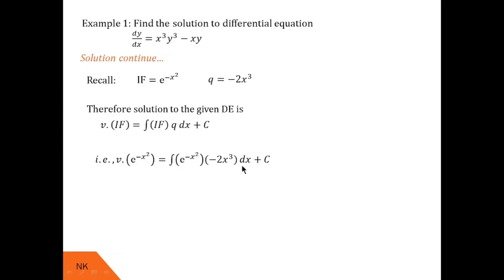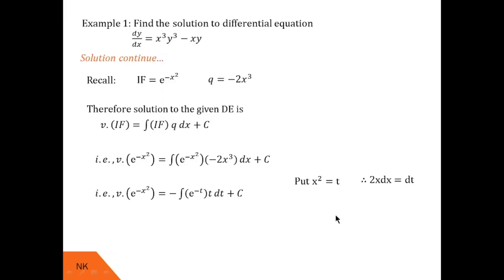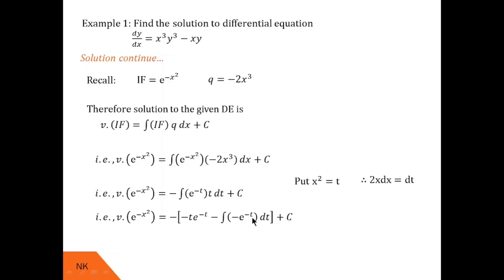To solve the RHS integral, we use the substitution x² = t, so 2x dx = dt. We split x³ = x²·x, allowing us to write the integral as −∫e^(−t) · t dt + C. Solving by integration by parts with u = t and dv = e^(−t) dt gives −[−te^(−t) − ∫(−e^(−t)) dt] = −[−te^(−t) − e^(−t)].